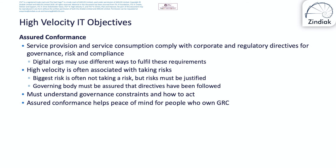The scope of the assured conformance objective includes ensuring that service provision and service consumption comply with corporate and regulatory directives with respect to governance, risk, and compliance. Beyond ensuring conformance, it is also important to assure the accountable people that conformance has been achieved. While external requirements may remain the same, there may be alternative and more appropriate ways to fulfil these for digital-enabled organisations. Assured conformance can be measured by the lack of security breaches, fines by regulators, bad publicity, actions required by internal and external auditors, and the cost of measures to ensure and assure compliance with governance, risk, and compliance issues.